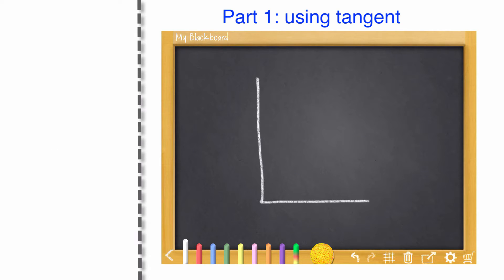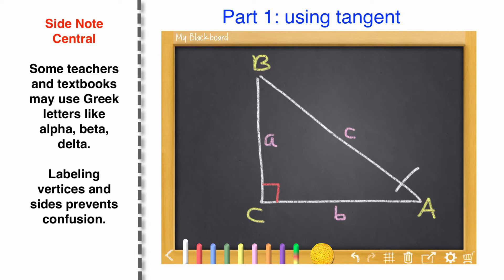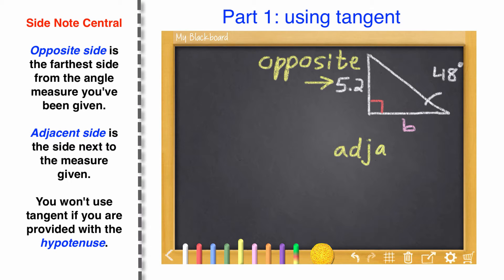Here we have a right triangle. I'm going to label the vertices capital A, B, C and label the sides lowercase a, b, c. This lets you intelligently talk about what you're going to find. Angle A is 48 degrees and side little a is 5.2 centimeters. So we've got our opposite side, and we need to find the adjacent side. Let's see how we can use tangent for this one.